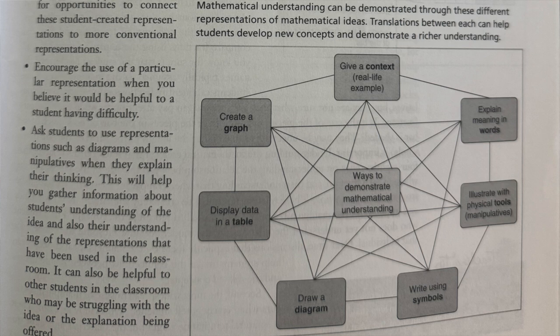In the video for this episode you can see the visual — just go to youtube.com/buildmathminds. Basically, the ways are: give a context, explain meaning in words, illustrate with physical tools and manipulatives, write using symbols, draw a diagram, display data in a table, and create a graph. The last two feel like they're only applicable to specific types of math situations, but the first four really should be done all the time. However, typically the use of manipulatives starts to diminish as kids get older, and instead we start to increase the use of just writing symbols. Kids need all four, no matter their age.